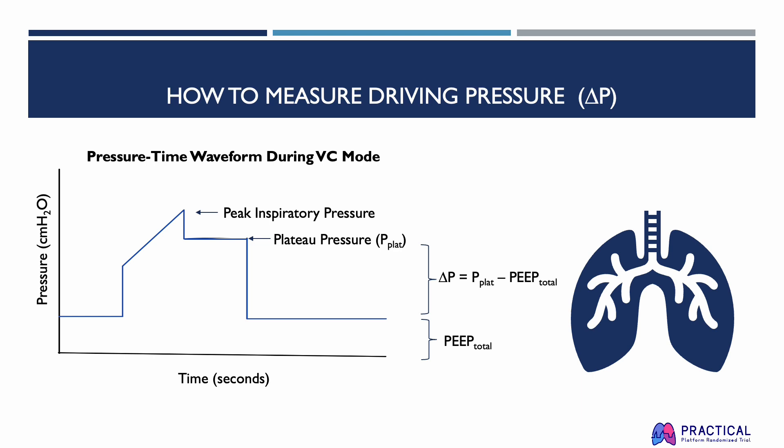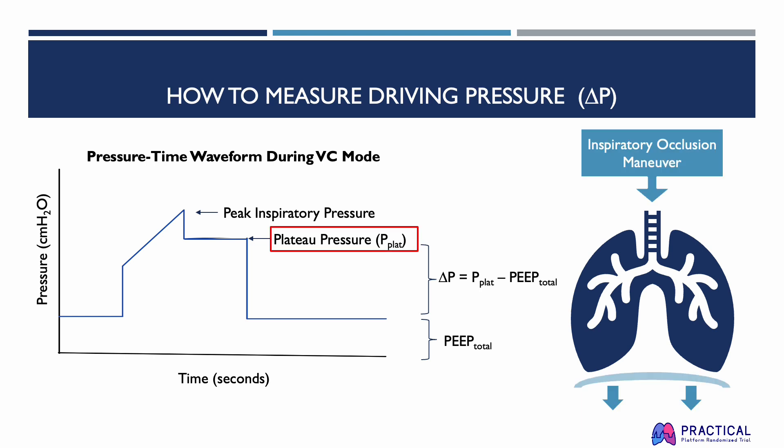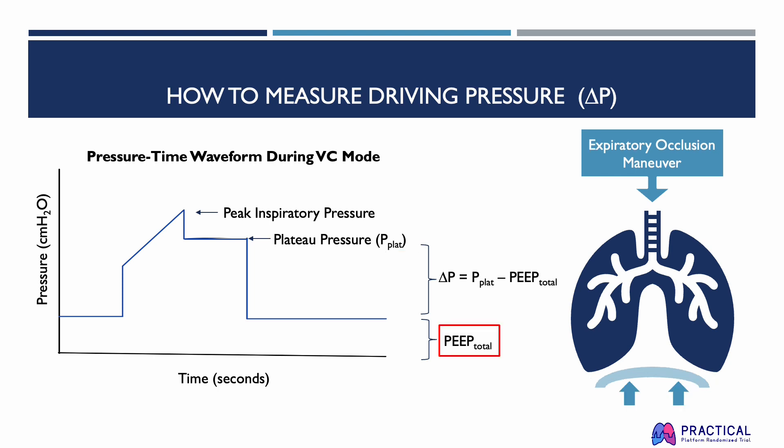You can obtain plateau pressure and total PEEP measurements to calculate driving pressure by performing inspiratory and expiratory occlusion maneuvers on the ventilator. When you perform an inspiratory occlusion maneuver, you can get your plateau pressure, while performing an expiratory occlusion maneuver will measure the total PEEP. It's important to ensure that there is a straight line on the pressure-time waveform with no interruptions from patient efforts during these maneuvers. You can then calculate driving pressure by taking the difference of plateau pressure minus the total PEEP. Most ventilators will allow you to perform these maneuvers during assisted and controlled ventilation modes, with the exception of the Puritan Bennett ventilators by Medtronic, which only permits these maneuvers during controlled modes.